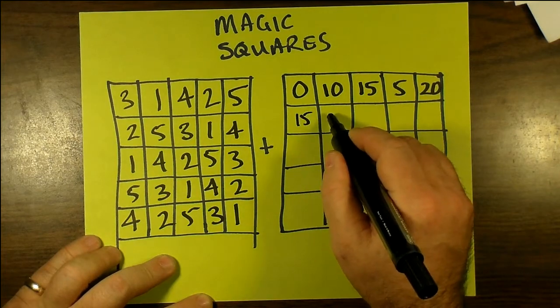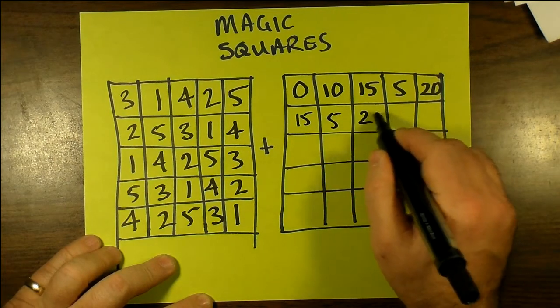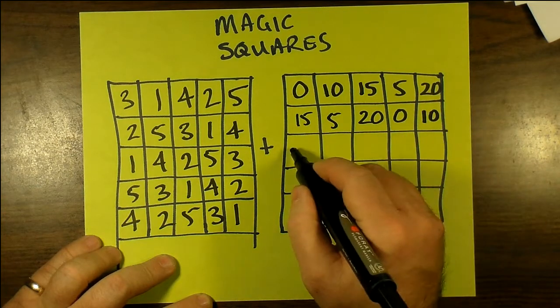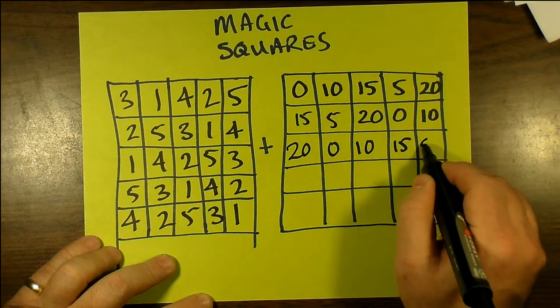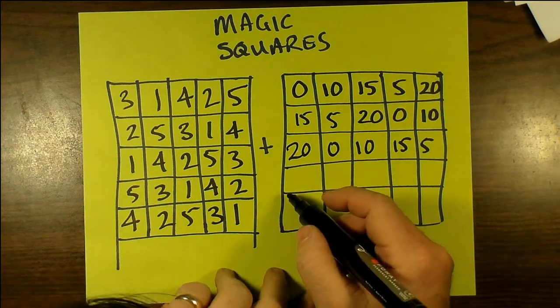And on the other square, you copy the last three numbers first, and then followed by the first two, and you keep doing this to the next row, following the same process with respect to the previous row.